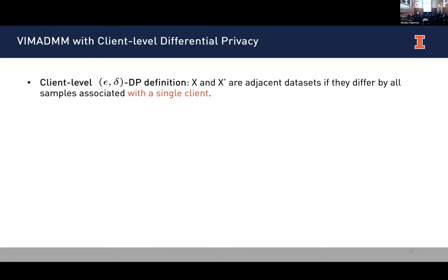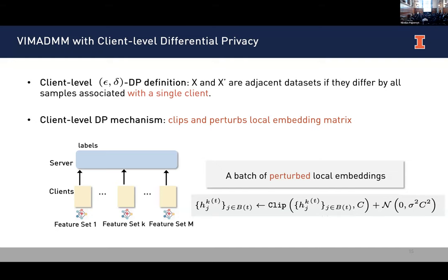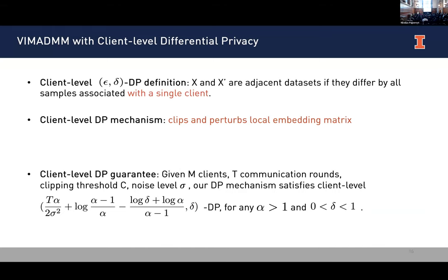To achieve differential privacy, we focus on client-level epsilon-delta DP. The datasets X and X' are adjacent if they differ by all samples associated with a single client. To achieve client-level DP, we introduce a straightforward mechanism: clipping and perturbing the local embedding matrices. During communication, the client sends a batch of perturbed local embeddings to satisfy DP — clipping the whole local embedding matrix with regard to a threshold C, then adding corresponding noise. We provide client-level DP guarantees given M clients, T communication rounds, clipping threshold C, and noise level sigma.